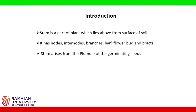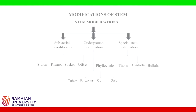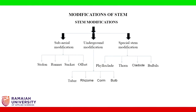Stem is a part of the plant which lies above the surface of the soil. It has nodes, internodes, branches, leaves, flower buds, and bracts. Stem arises from the plumule of the germinating seed. The various stem modifications are: sub-aerial modification, underground modification, and special stem modification. Under sub-aerial modification, they are classified into stolon, runner, sucker, and offset.